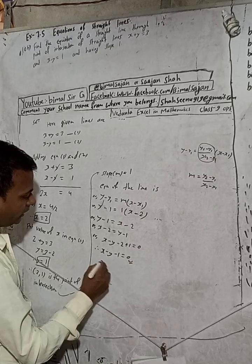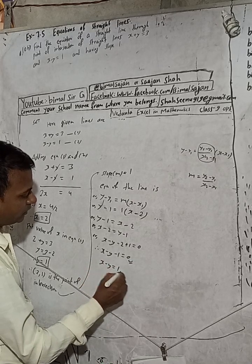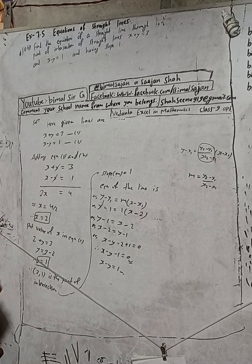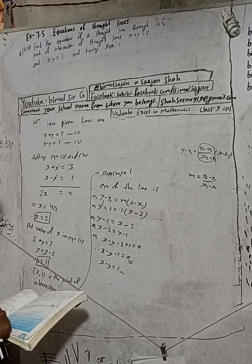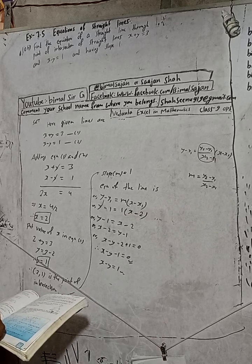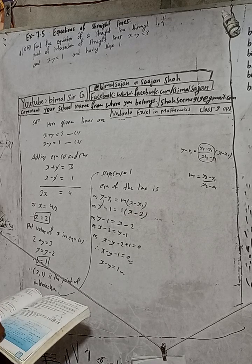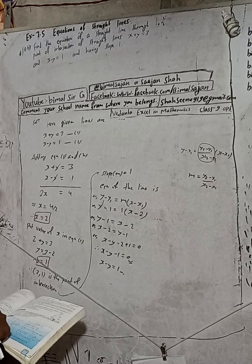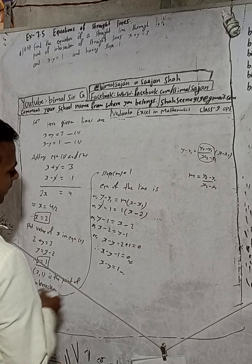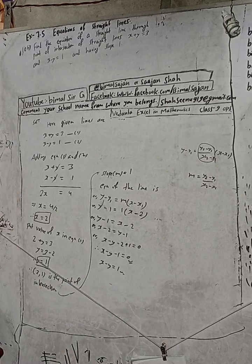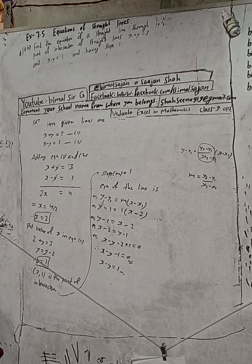The answer is x minus y equals 1. Checking the book, the answer for question 10b is x minus y equals 1 — that matches. So dear students, this is the required solution. There is no need for further explanation as this is a simple question.